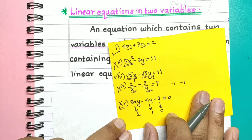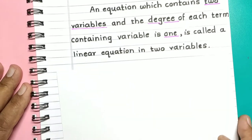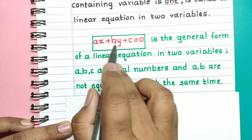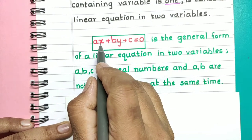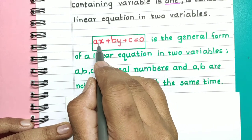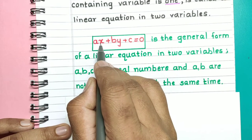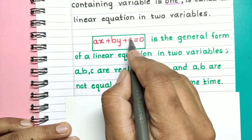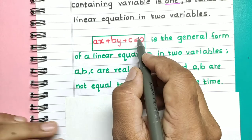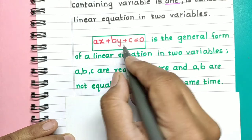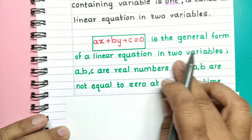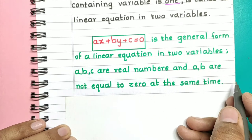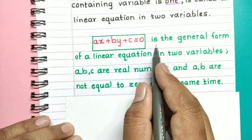Now let's look at the general form of a linear equation: Ax plus By plus C is equal to 0. This is a linear equation in two variables. The first term Ax has variable x with power 1, so degree is 1. The second term By has variable y with power 1, so degree is 1. The next term C is a constant with no variable. This is the general form of a linear equation in two variables, where A, B, C are real numbers and A and B are not both equal to 0 simultaneously, as that would make the equation meaningless.